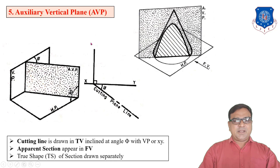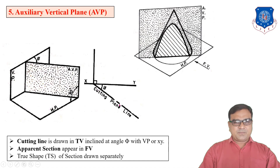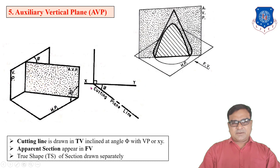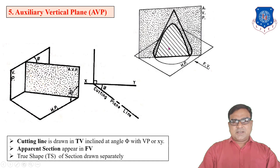The auxiliary vertical plane (AVP) is inclined to the vertical plane and perpendicular to the horizontal plane. In this case the cutting plane line appears in the top view, and the front view gives the sectional front view. When the cone is cut by AVP and the small part is removed, the sectional front view does not represent the true shape, because for the true shape the plane must be parallel to VP — here the cutting plane is inclined to VP.